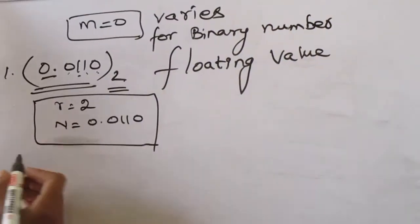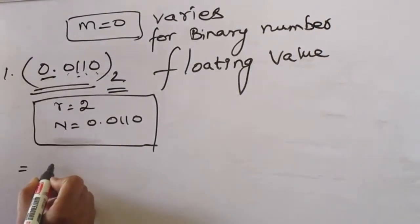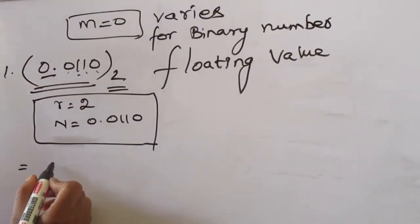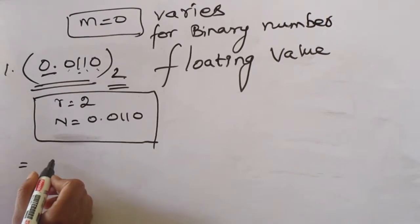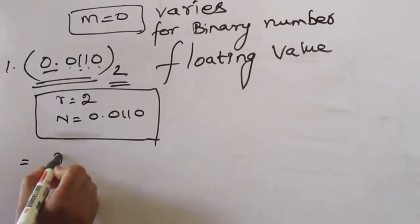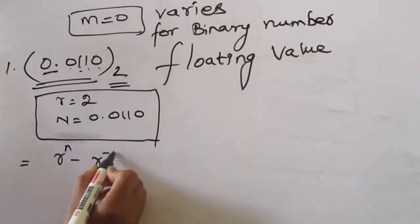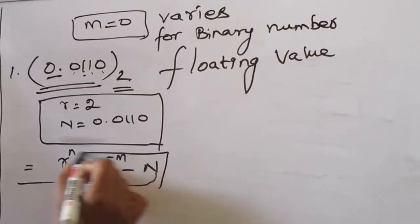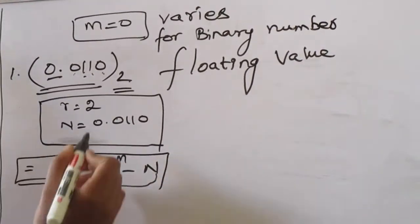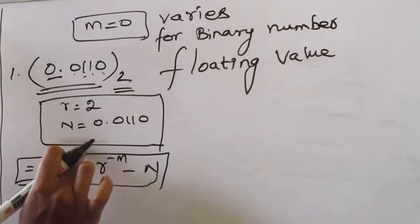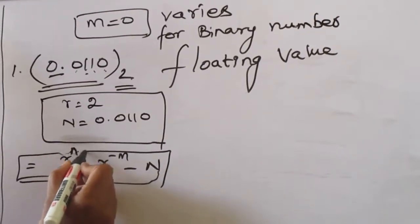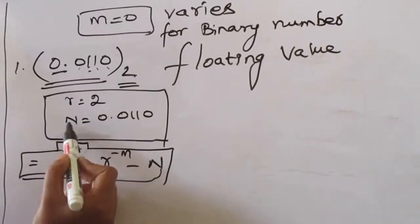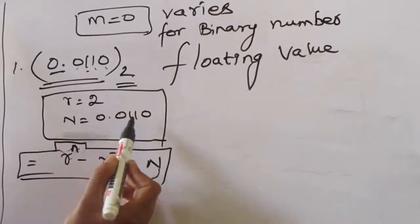I will apply the same formula we used for binary numbers in the decimal part. The formula is: r power n minus r power minus m minus n. This is the formula we are going to use here. r is the base value and n is the number of digits given.